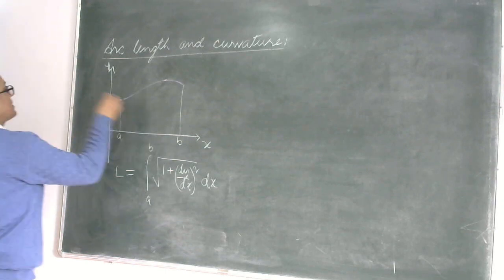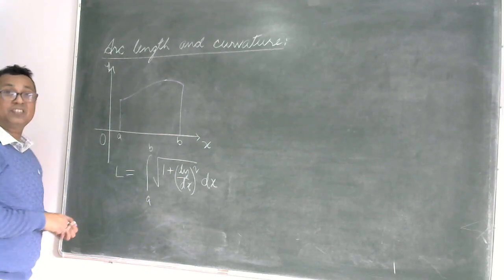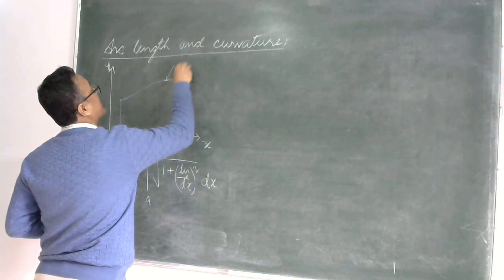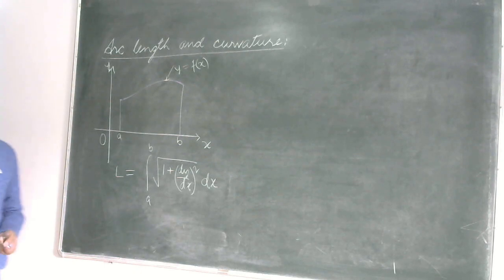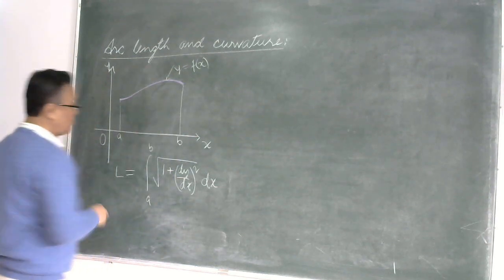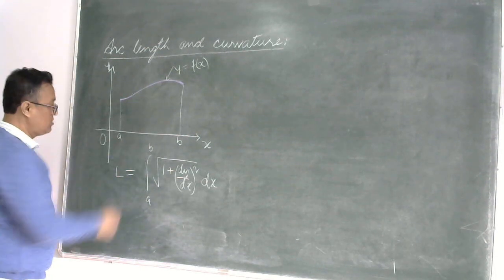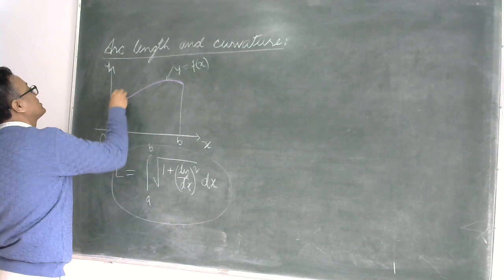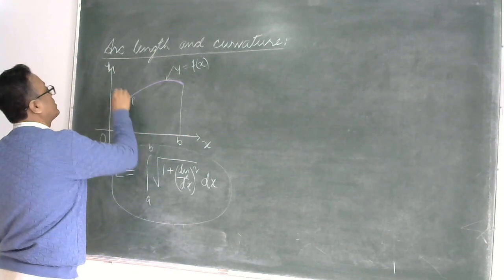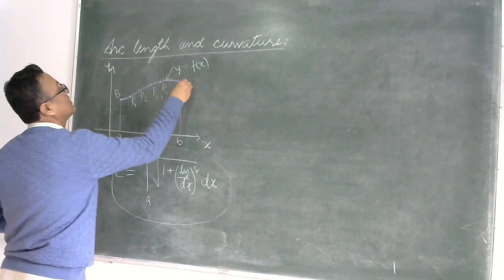You can see on the blackboard that I have drawn a curve here in the x-y plane. This is nothing but the graph of a function in the variable x: y equal to f(x). We have assumed that this function is continuous and differentiable. If that is the case, then you can get the length of the curve in the interval through this formula. We imagined points p0, p1, p2, etc.